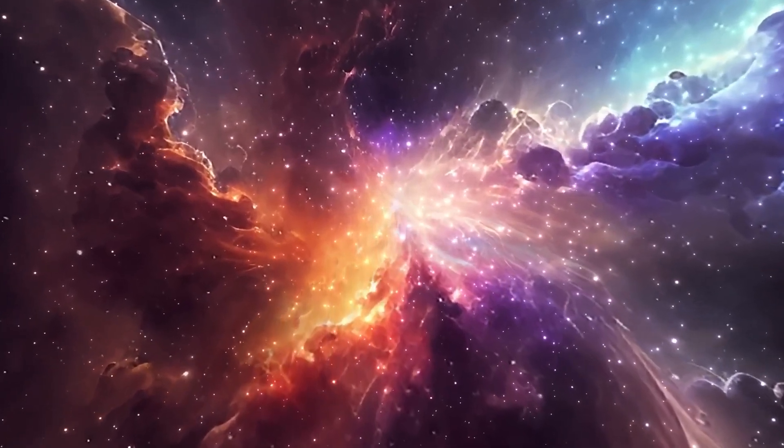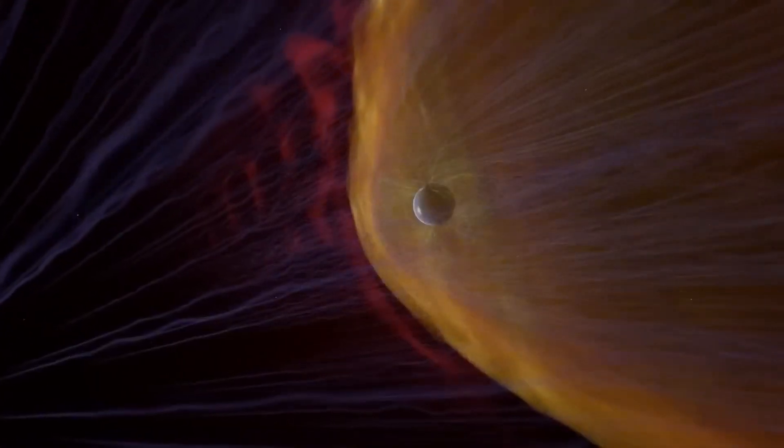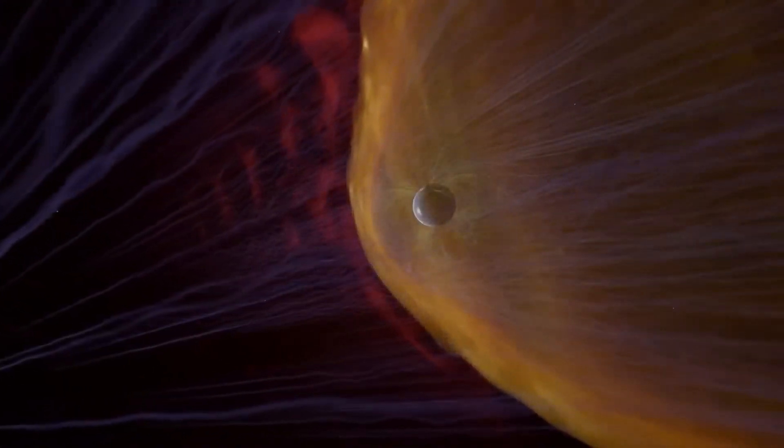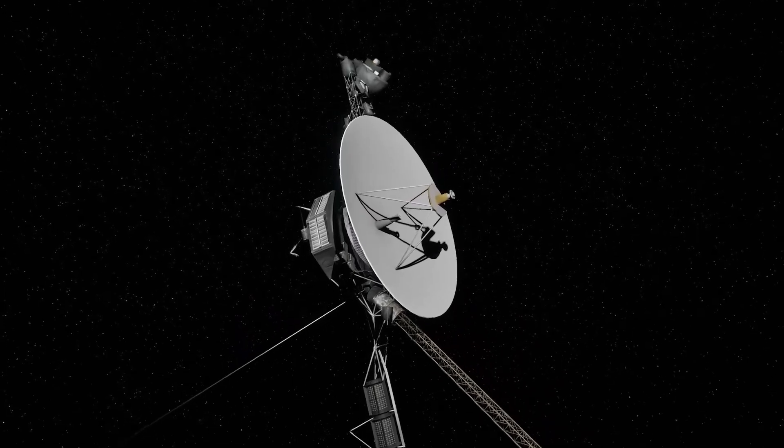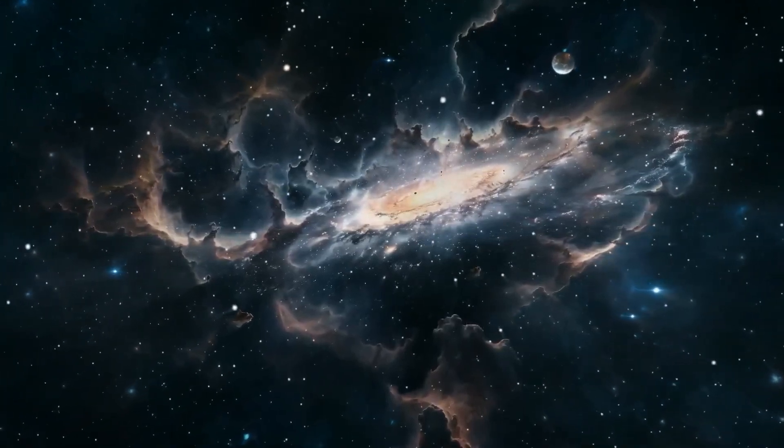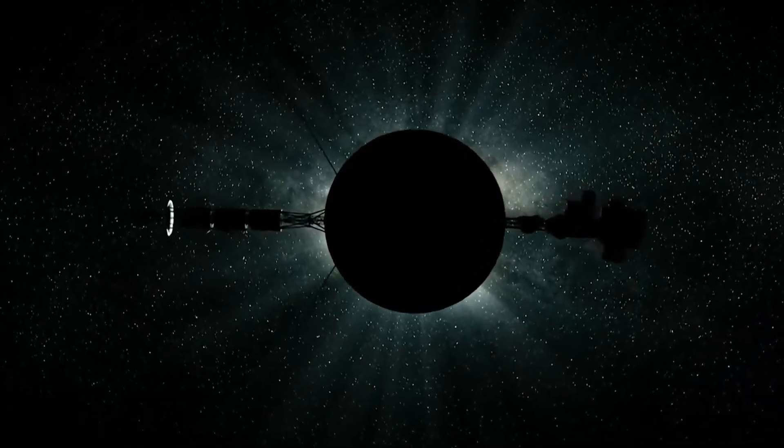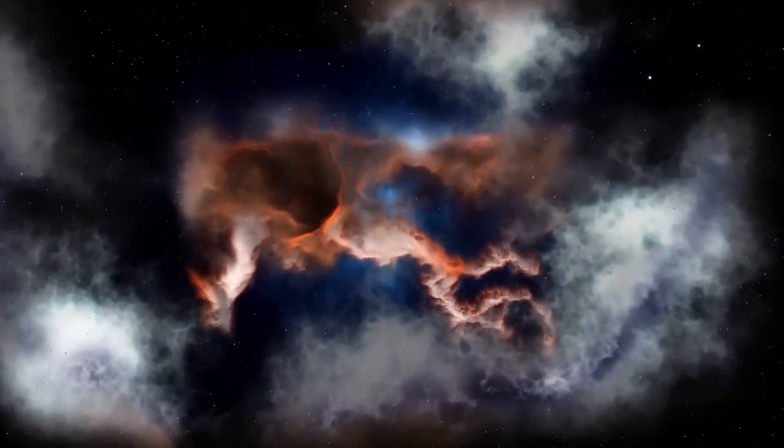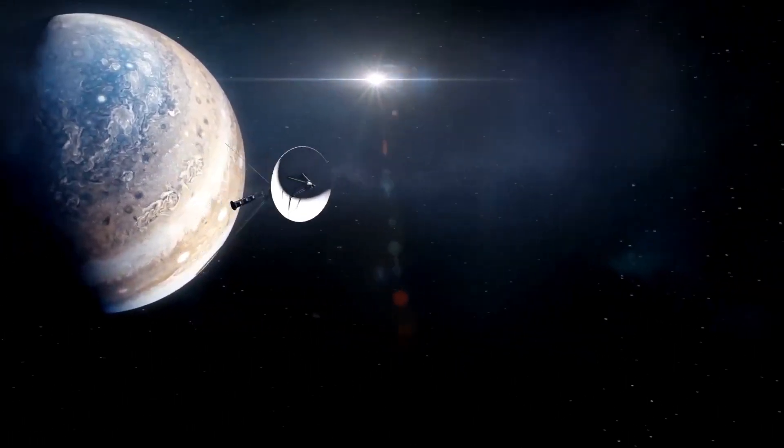Voyager 2's journey has not been without challenges. As the spacecraft drifts farther from Earth, its signals grow weaker, requiring advanced technology and ingenuity to maintain communication. It takes over 18 hours for a signal to travel from Voyager 2 to Earth, highlighting the vast distance it has traveled. The mission team has worked tirelessly to keep Voyager 2 operational, overcoming hardware limitations and the effects of deep space radiation. Each message received is a triumph of human perseverance, a reminder of our determination to push the boundaries of exploration. Even as the spacecraft's power supply dwindles, the information it sends back continues to provide invaluable insights, helping us understand the universe in ways we never thought possible.